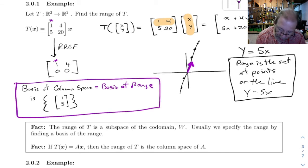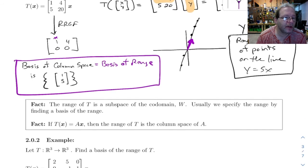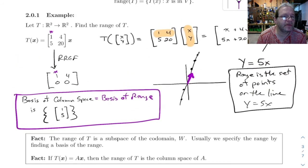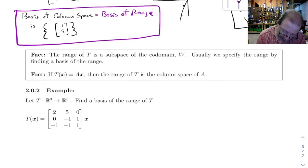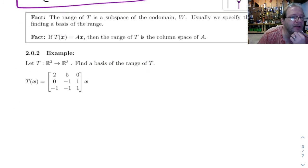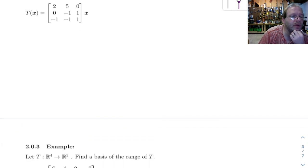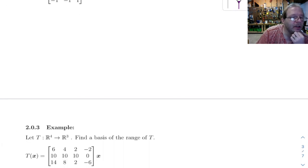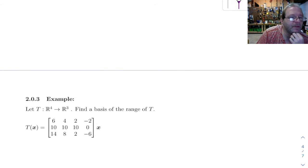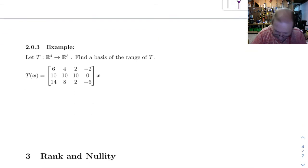And in general, this is a much better way of describing the range, is by giving a basis of it instead of going through and working this stuff out. So in general, when we answer these questions, instead of wording it as find the range, we're going to say find a basis of the range. So I want to do examples 2.0.2 and 2.0.3. And as I frequently do, I'm going to do these out of order. Let's do 2.0.3 first.